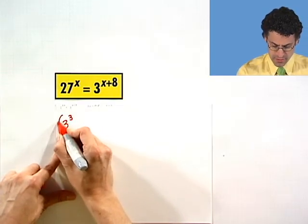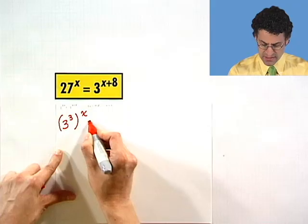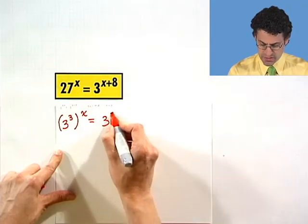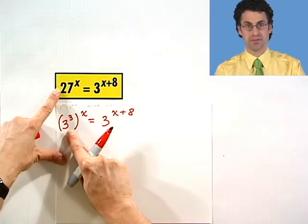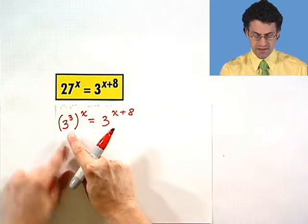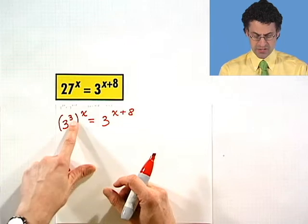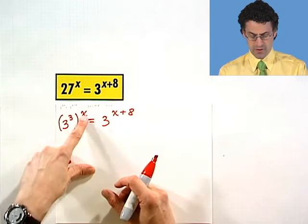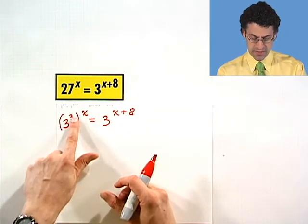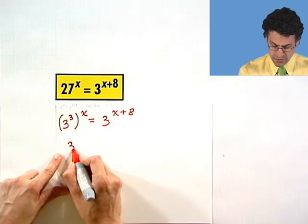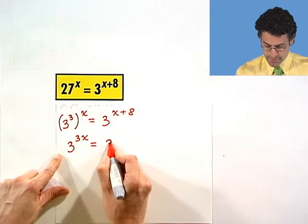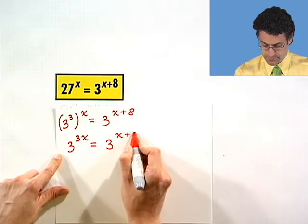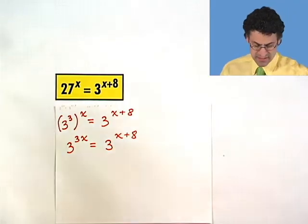3 cubed raised to the x equals 3 to the x plus 8. And why? Because 3 cubed is the same thing as 27. Now I can use properties of exponents to know that if I have 3 to a power and I'm raising the whole thing to another power, I multiply these together. And so now I convert the original equation to this equivalent one.